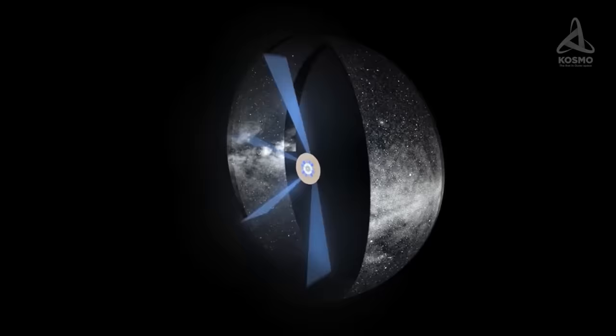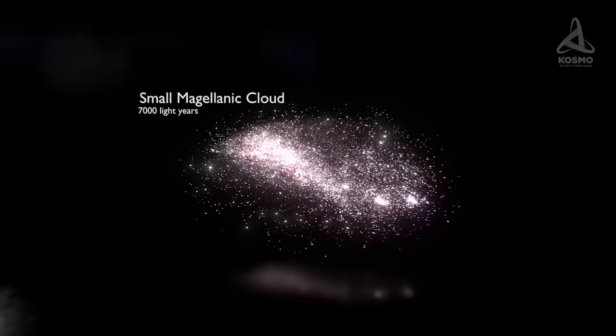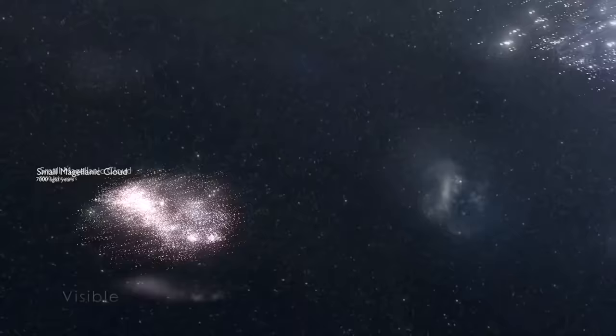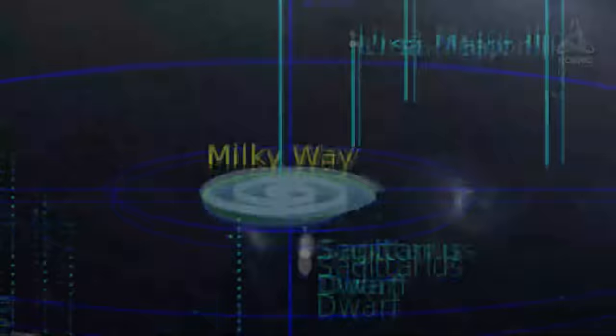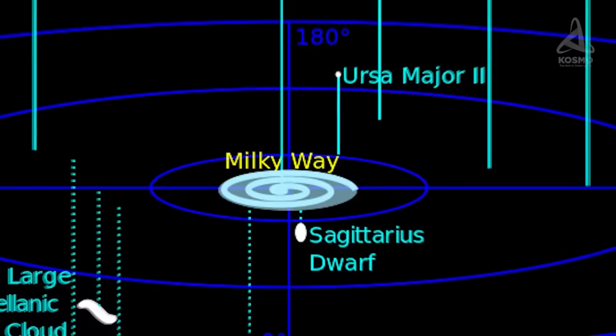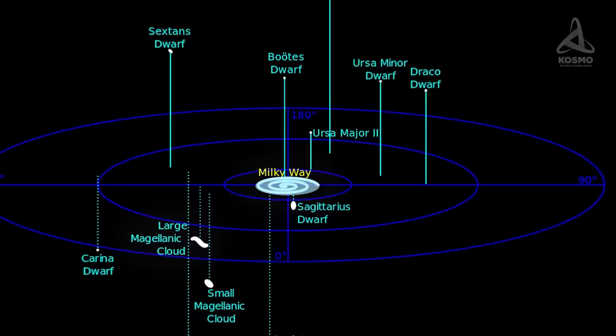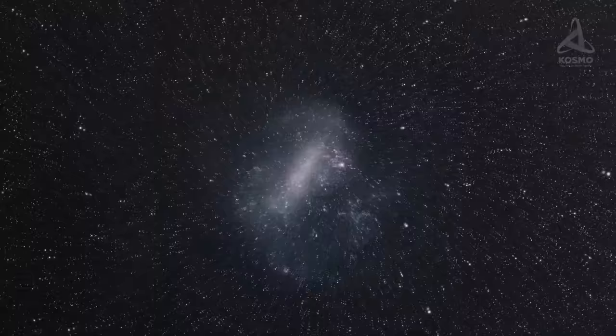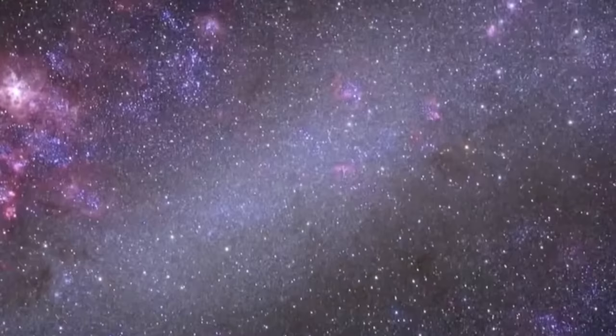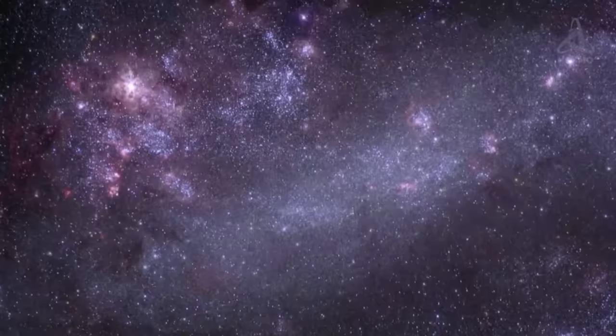When speaking about our nearest neighbors, one can't but mention the Large and the Small Magellanic Clouds, two dwarf galaxies and satellites of the Milky Way. The Large Magellanic Cloud is 163,000 light years away from us. That is a distance almost one and a half times bigger than our galaxy. The Large Magellanic Cloud finds itself in the area between the Dorado and Mensa constellations in the Southern Hemisphere, which is the reason why it is unlikely to be seen from most of Eurasia. The galaxy is approximately 10 times smaller than the Milky Way and contains approximately 30 billion stars.